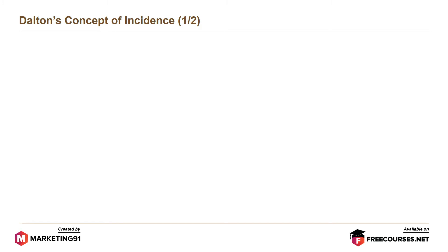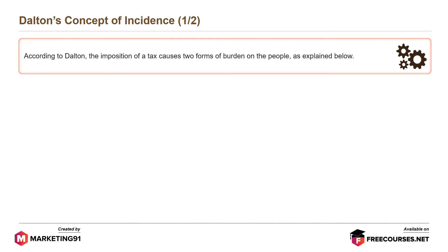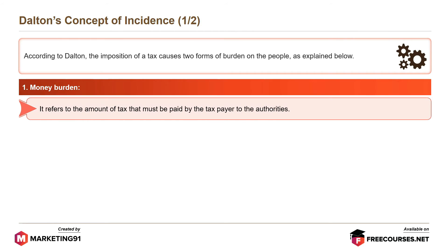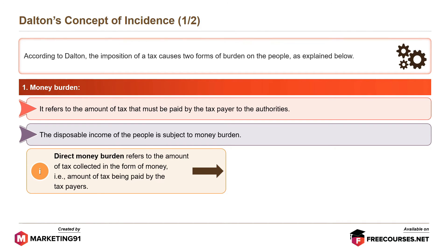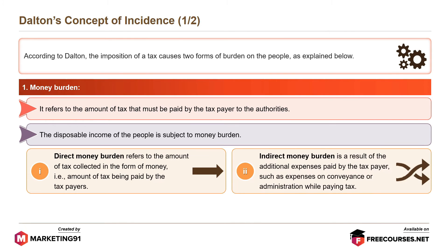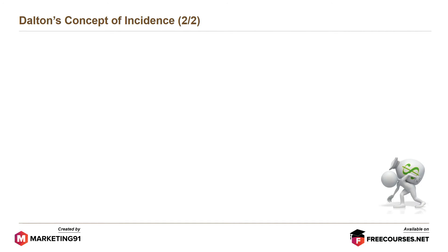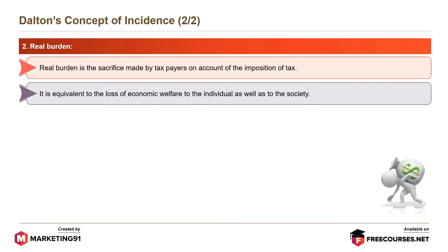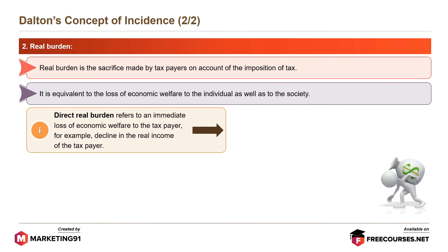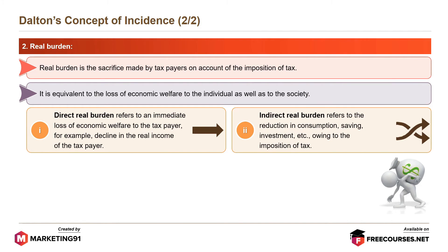Now let's look at Dalton's concept of incidence. According to Dalton, the imposition of a tax causes two forms of burden on the people. Money burden refers to the amount of tax that must be paid by the taxpayer to the authorities. The disposable income of the people is subject to money burden. Direct money burden refers to the amount of tax collected in the form of money, that is, the amount of tax being paid by the taxpayers. Indirect money burden is a result of the additional expenses paid by the taxpayer, such as expenses on conveyance or administration while paying tax. Real burden is the sacrifice made by taxpayers on account of the imposition of tax; it is equivalent to the loss of economic welfare to the individual as well as to the society. Direct real burden refers to an immediate loss of economic welfare to the taxpayer — for example, decline in the real income of the taxpayer. Indirect real burden refers to the reduction in consumption, saving, investment, etc., owing to the imposition of tax.